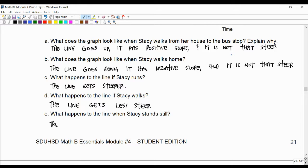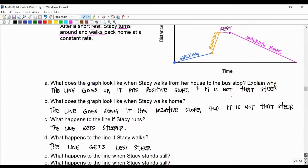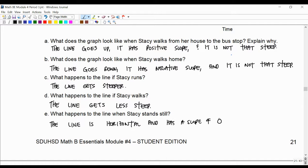And what happens to the line when Stacy stands still? That would be a rest. Next, the line is, we call this horizontal. And has a slope of, see if you can remember, what type of slope was a horizontal line or a speed that was kind of just not going anywhere. It went that the speed was zero, and that the slope was zero.